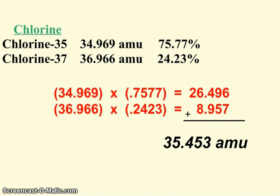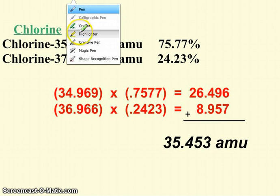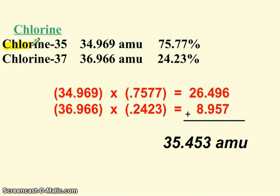So here you see the calculation of chlorine's atomic mass. There are two isotopes of chlorine on the planet. Chlorine-35 and chlorine-37.